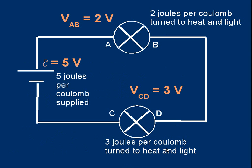Let's take a look at the overall circuit we've discussed. We have a cell supplying a certain amount of energy for each coulomb that passes through it, and two bulbs. The EMF is five volts; the top bulb has a voltage of two volts and the bottom bulb three volts. We can write V_AB to mean the voltage between points A and B, and V_CD to mean the voltage between points C and D. Compare this carefully to the diagram of the table tennis balls — I hope you'll see exactly what is going on.